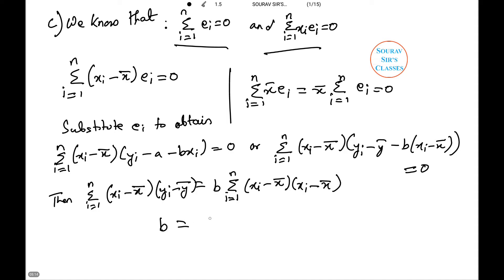So b equals summation i from 1 to n (x_i minus x bar)(y_i minus y bar) divided by summation i from 1 to n (x_i minus x bar)^2. And hence, it is proved.